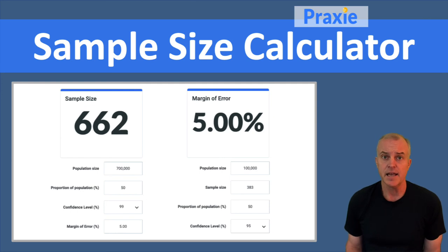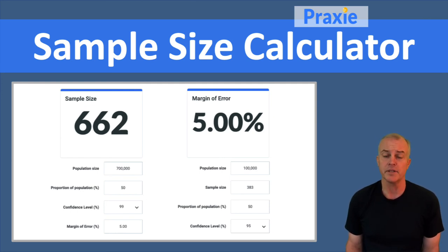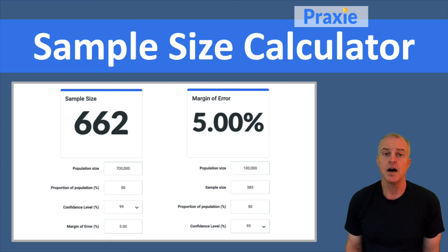So what you want to use in the sample size calculator is just enter some data, and it'll tell you, based on your overall population, what is the sample size that will be representative of the population you're trying to understand.